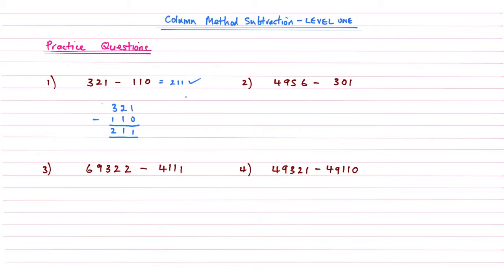Question number 2, same idea. Write out the numbers making sure to line them up in terms of place value, so 4956 subtract 301. Draw your lines. 6 subtract 1 well that gives me 5, 5 subtract 0 again that just gives me 5.